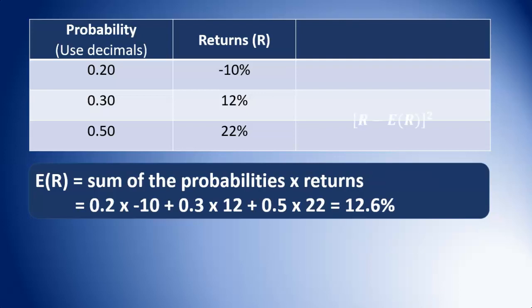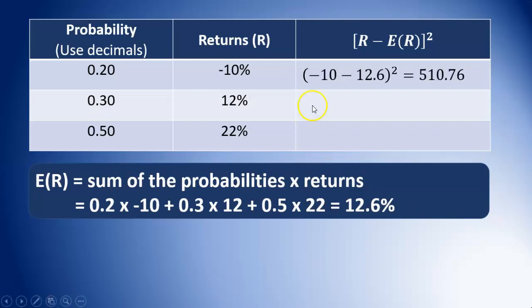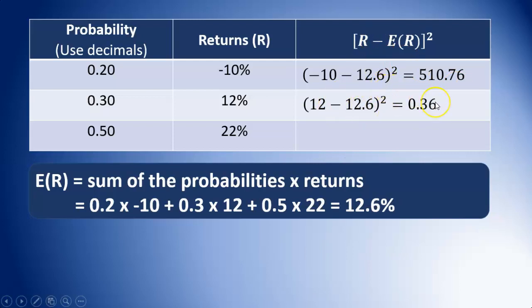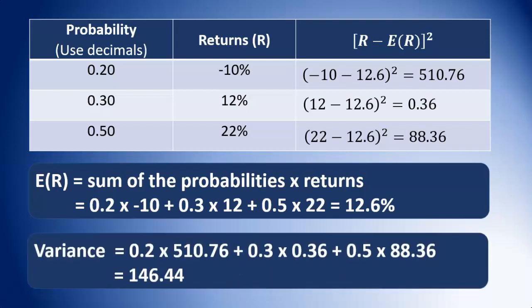For the variance, we find the squared deviation from the mean. Negative 10 minus 12.6, all squared, gives 510.76. 12 minus 12.6, all squared, gives 0.36. 22 minus 12.6, all squared, gives 88.36. With probabilities, the variance equals the sum of each probability multiplied by the squared deviation from the mean. So: 0.2 times 510.76, plus 0.3 times 0.36, plus 0.5 times 88.36, and all of that works out to 146.44 — that's our variance.